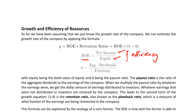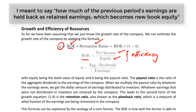It's a measure of efficiency in that it tells you how well a manager is turning equity into net income, which is what we want. In order to calculate the growth rate, we need this measure of efficiency — ROE — and we're going to multiply it by the retention ratio. The retention ratio is how much of the previous period's book equity they're holding back to reinvest in the company. This is sometimes called the plowback ratio.